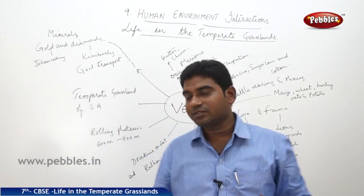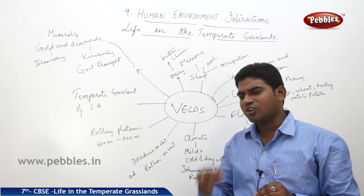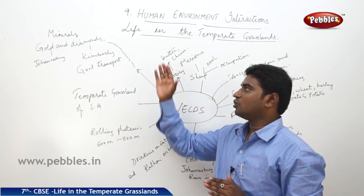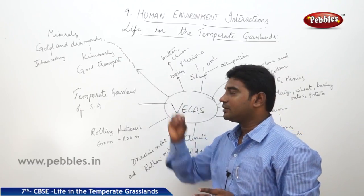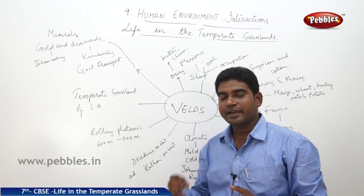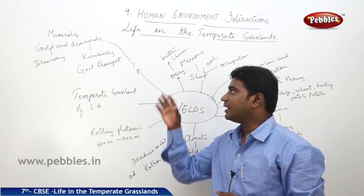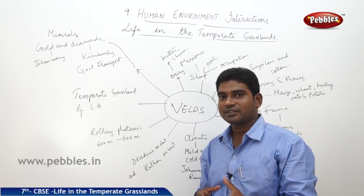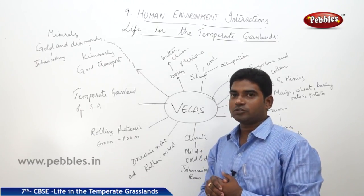Apart from all these things in the Velds, there is abundant availability of very costly and precious minerals — gold and diamonds. Gold mines are found in Johannesburg while diamond mines are found in Kimberley, both of which are world famous. Even the British made South Africa a colony in order to carry out mining, and good transportation facilities were provided under colonial rule and afterwards as well.